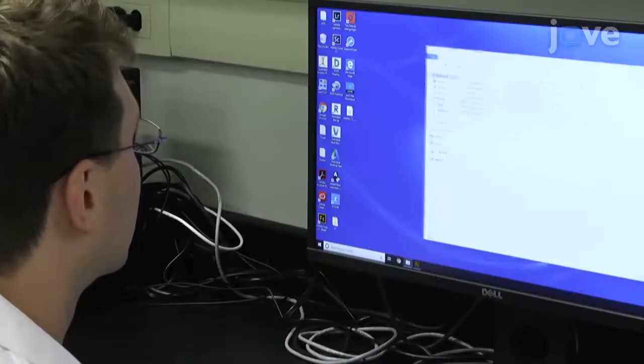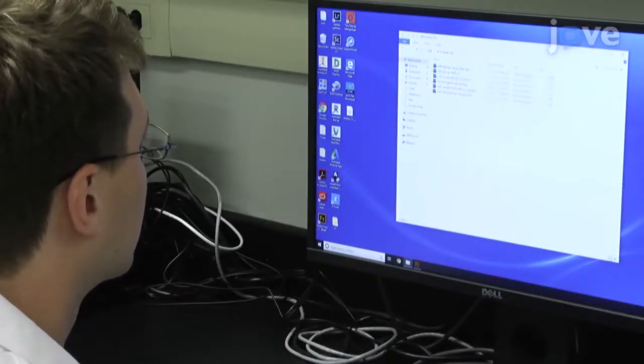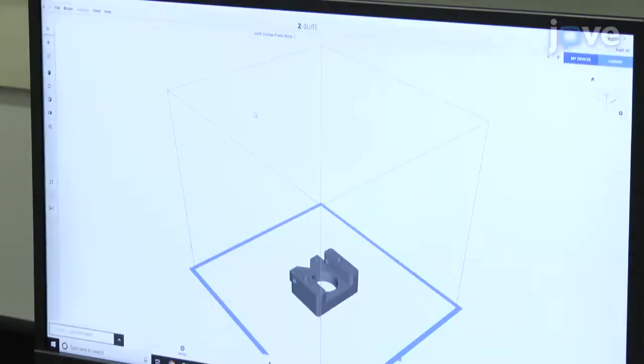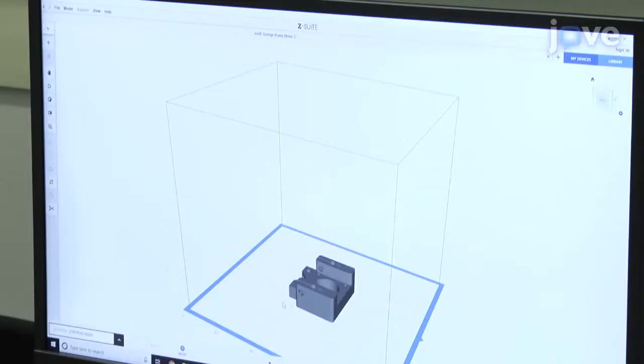To begin, download the .stl design files from the supplemental files of this publication. Prepare these files for printing by opening them in a software package dedicated to the conversion of .stl model files to executable instruction sets for the 3D printer being used. Ensure that the proper software is being used as some printers will require proprietary software whereas others may be able to print directly from the .stl file.